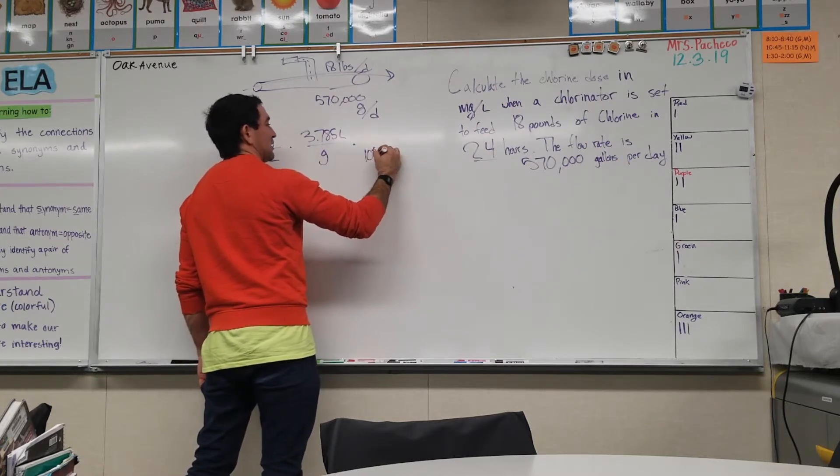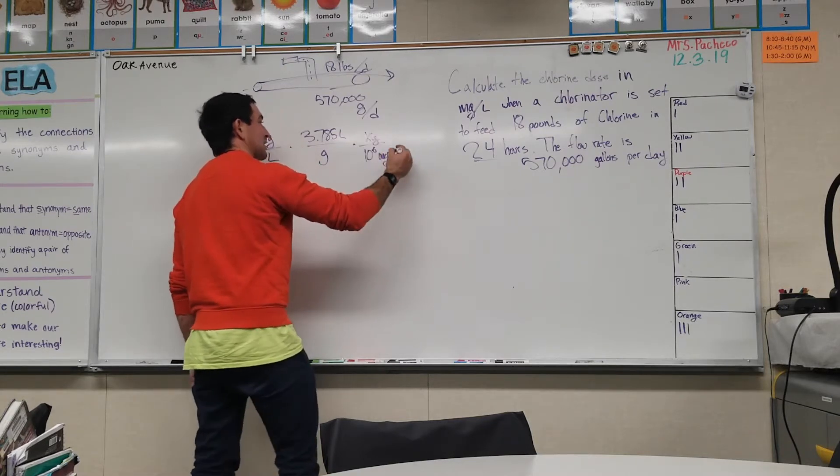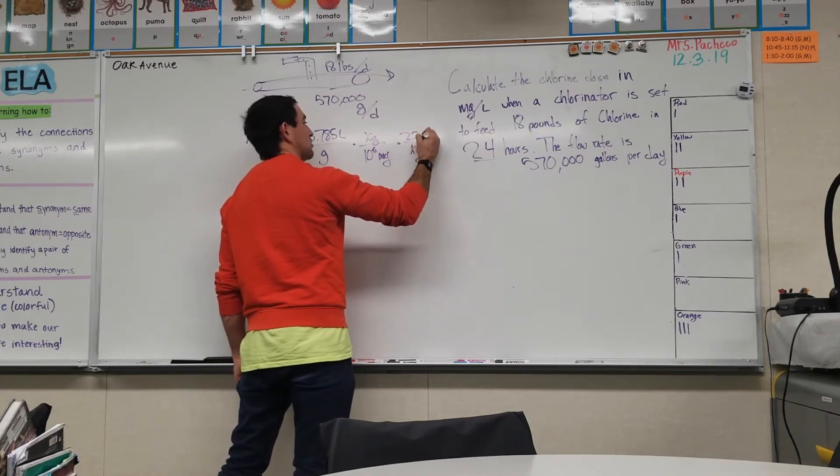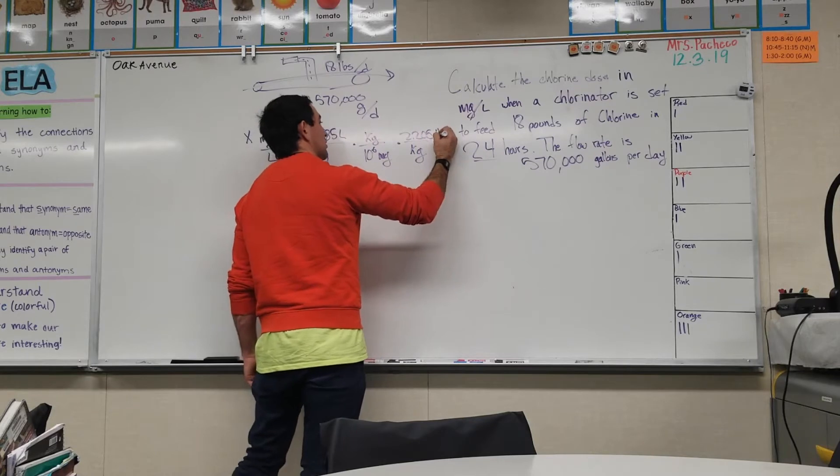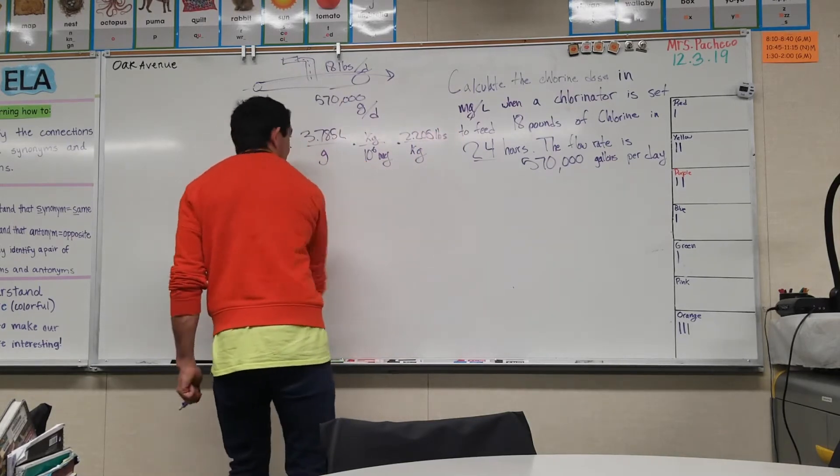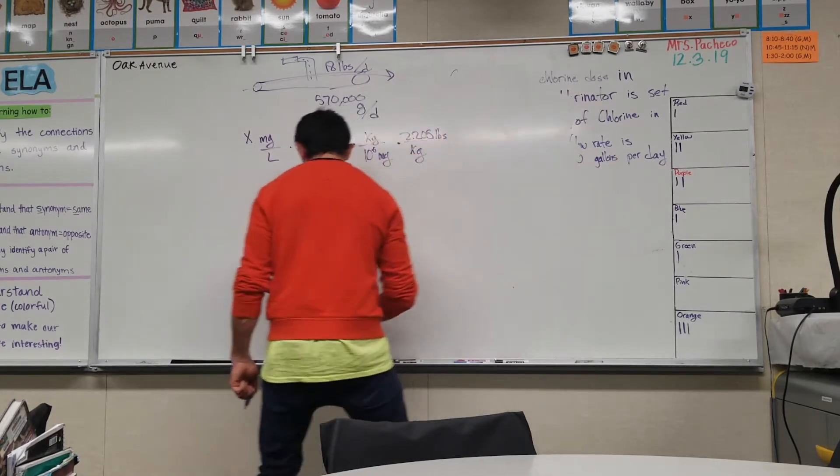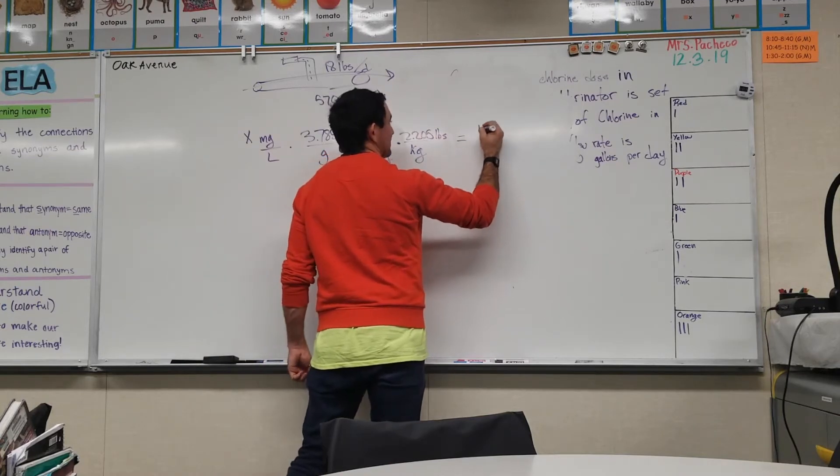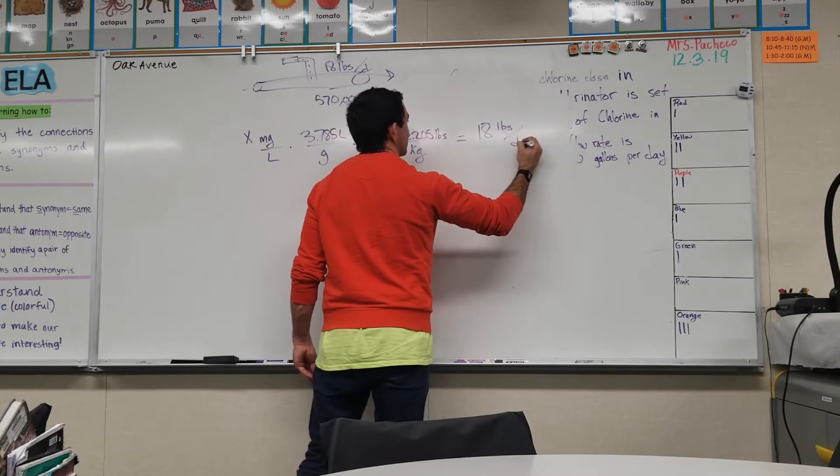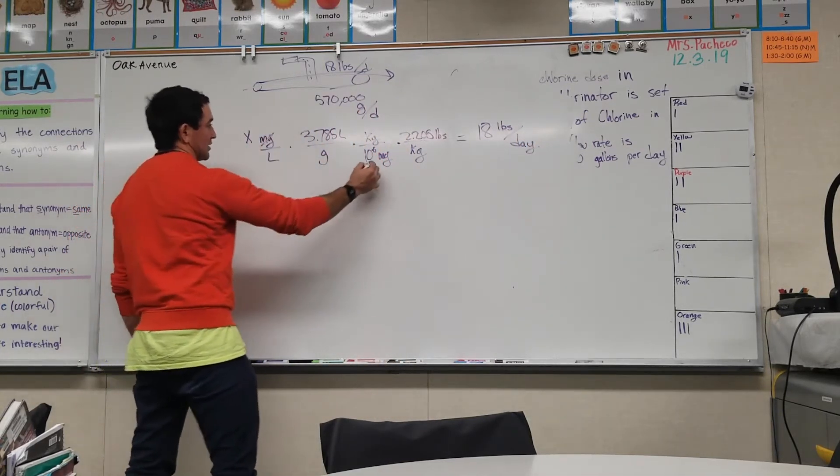For every million milligrams there's one kilogram. Get rid of kilograms because for every kilogram there's 2.205 pounds. That has to equal 18 pounds per day, and it will once we figure out x.